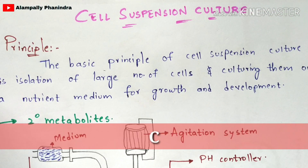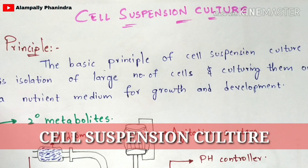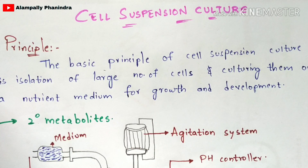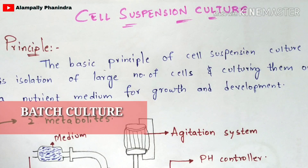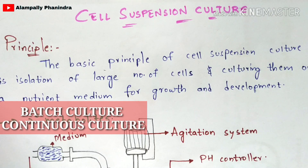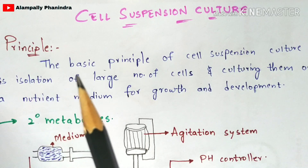In this video, let us discuss about cell suspension culture. I am going to explain the basic principle and procedure of this cell suspension culture. There will be two types: batch culture and continuous culture. Both batch culture vessel and continuous culture will be explained in the next video.